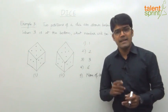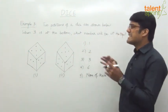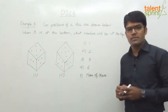Look at the next example. Example 3. Two positions of a dice are shown below. When 3 is at the bottom, what number will be at the top?